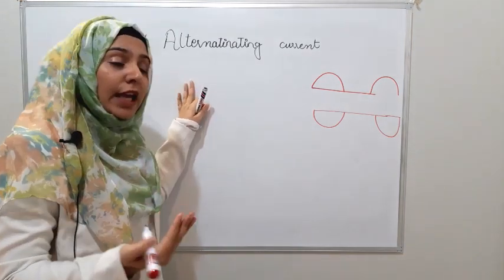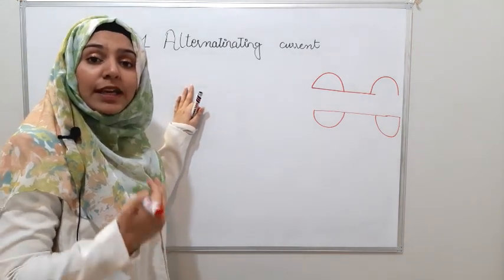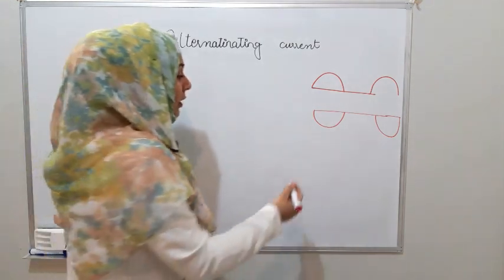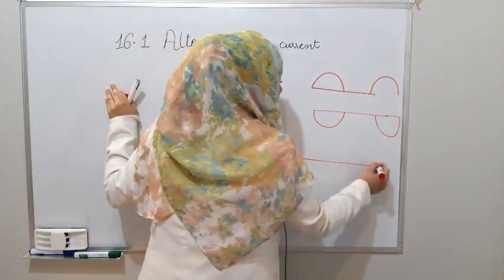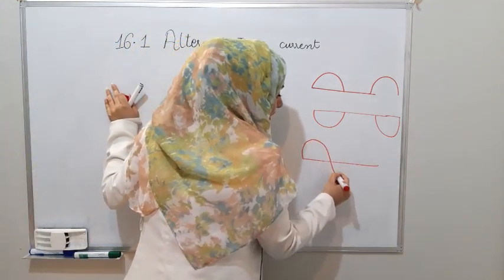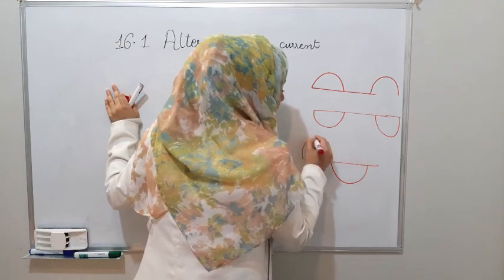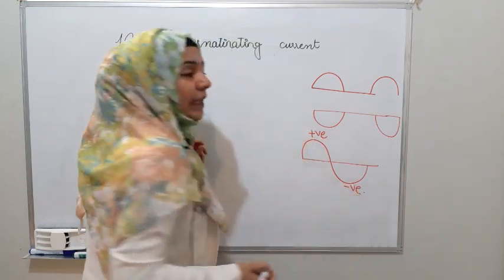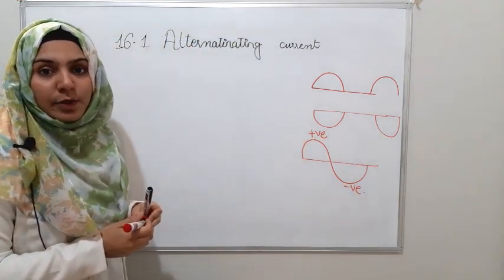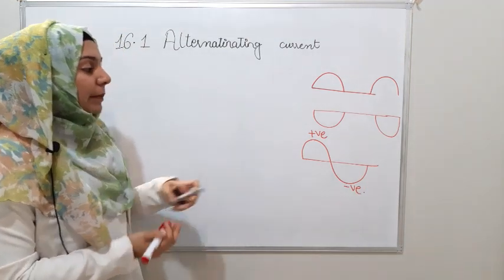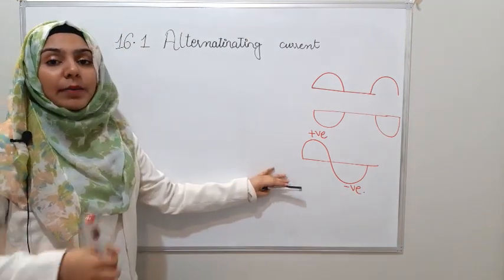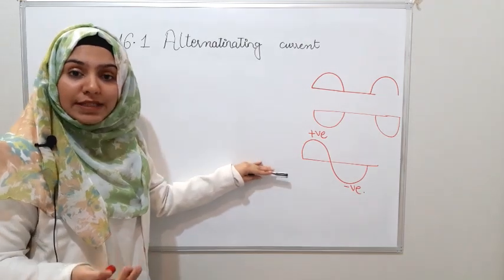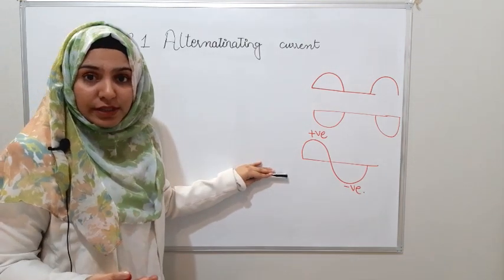Alternating current changes in the sense that it alternates between positive polarity and negative polarity. Sometimes we get a positive maximum value, sometimes we get a negative maximum value. The main source we use for this is the AC generator.